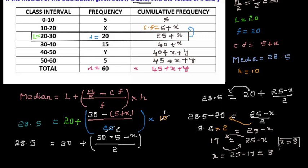Now that we have x = 8, we substitute into the total frequency equation: 60 = 45 + 8 + y. So 60 = 53 + y. Transferring 53 to the other side: y = 60 − 53 = 7. Therefore, the value of y equals 7.